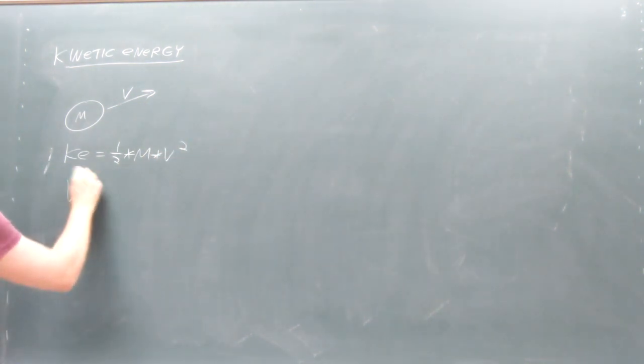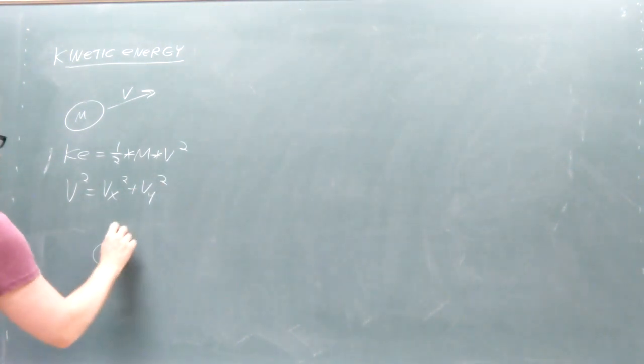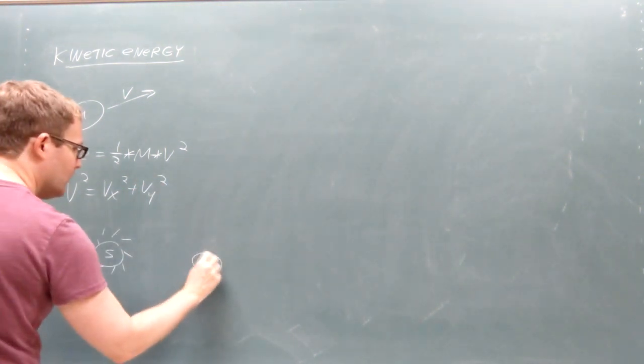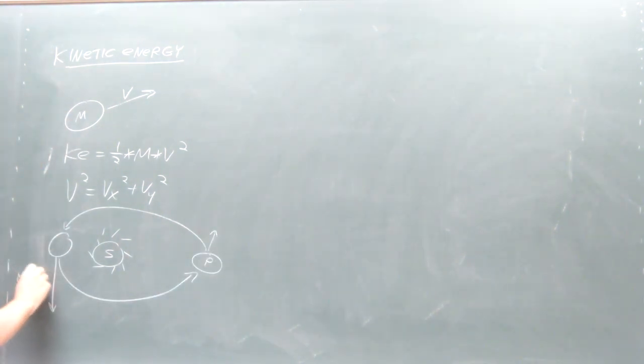Since velocity is a vector, this square is calculated using the Pythagorean theorem. The planet has more kinetic energy when closer to the star and less kinetic energy when farther away since the force of gravity causes the planet to get faster as it approaches the star.